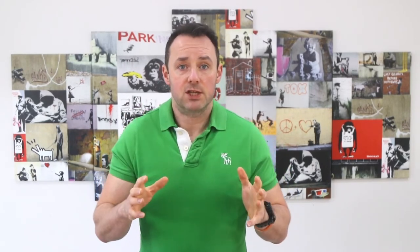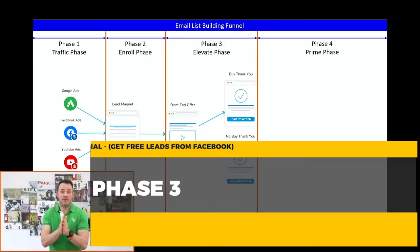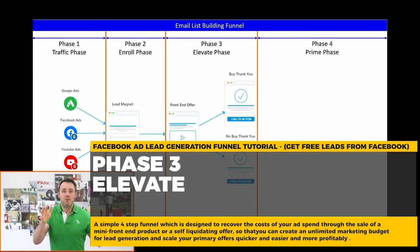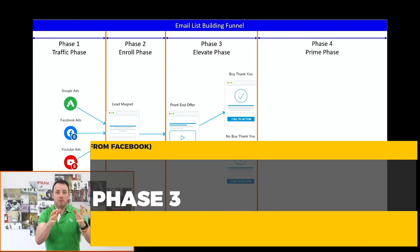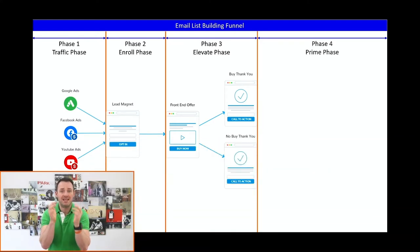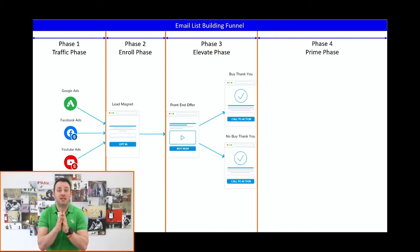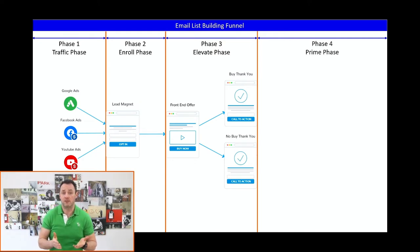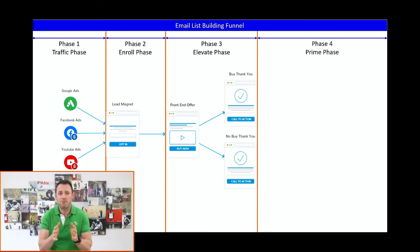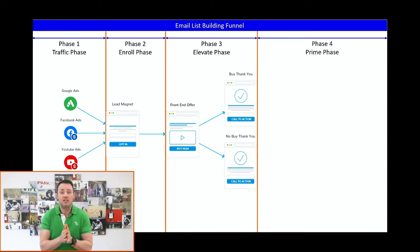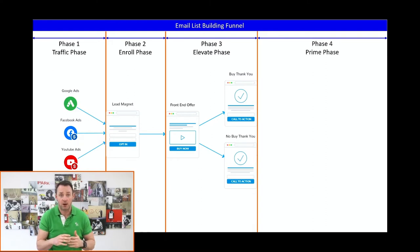Now for the magic — phase three, the elevate phase. We've driven people from paid ads to our lead magnet opt-in page. Once somebody opts in, instead of a standard thank-you page, we're going to redirect them to a page that makes an offer for a low dollar amount, normally in the range of $17 to $47. Many people who attempt this approach fail to achieve the results they want, and the key reason is misalignment between their lead magnet and their mini front-end product.